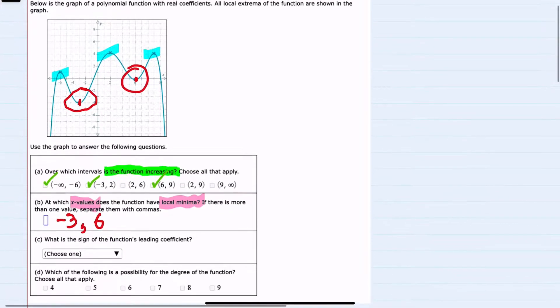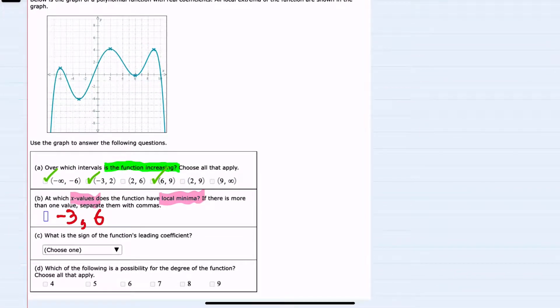And looking at our next question, we're asked for the sign of the function's leading coefficient. And for that we can look at the end behavior. We can see that this graph is going down to the left, down to the right.